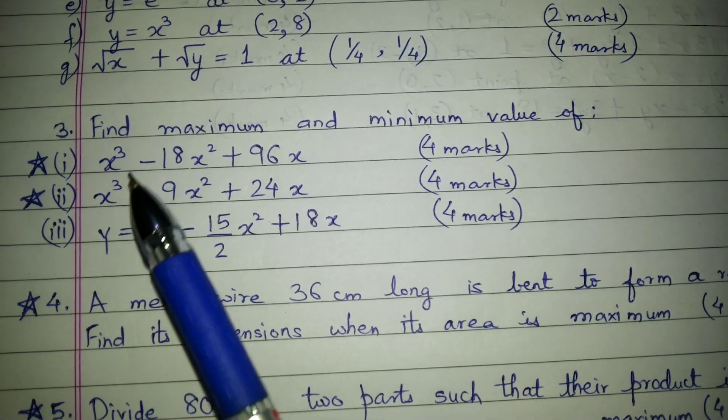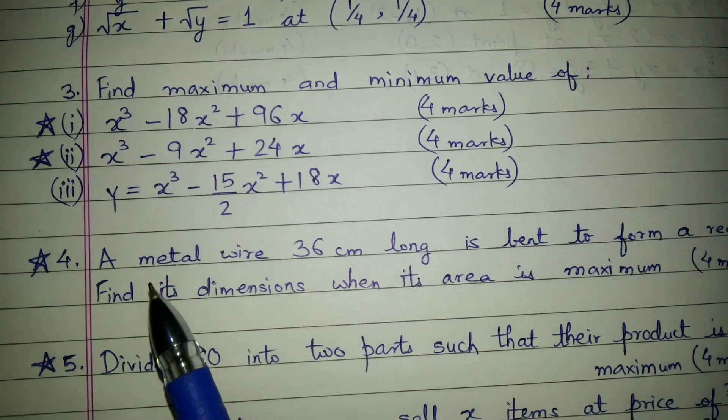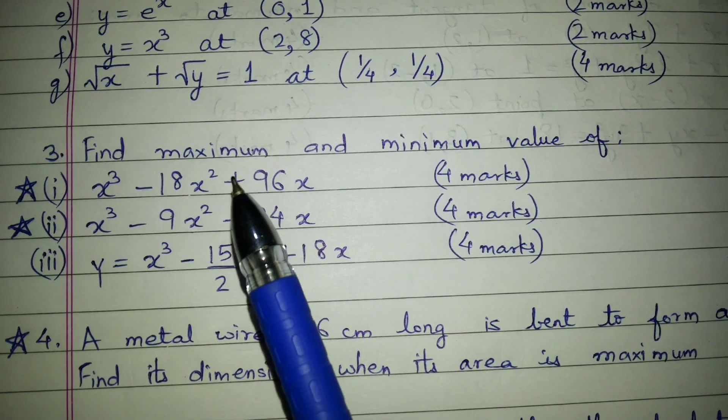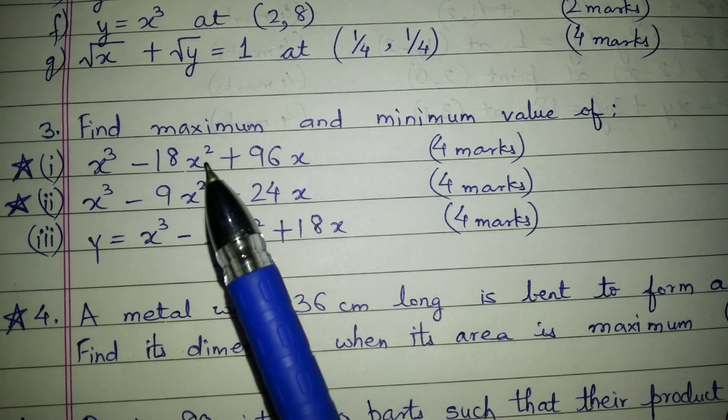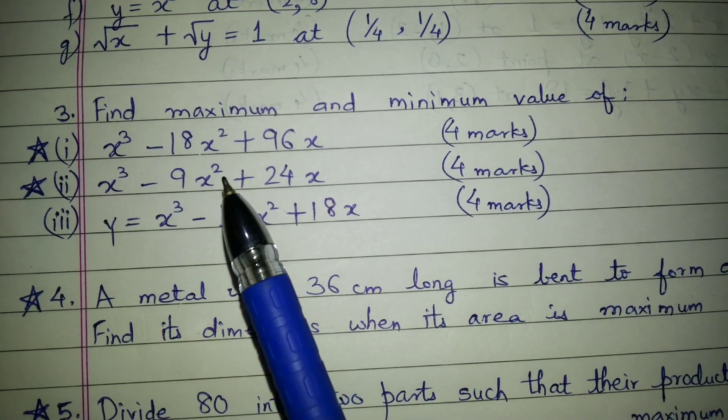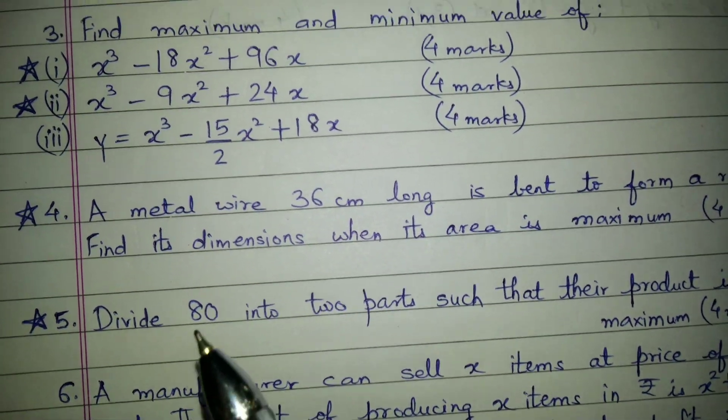Then question number three, question number four, question number five and question number six. This is related to maximum and minimum value. So these three questions are direct questions and other questions are word problems.